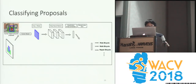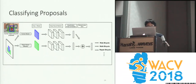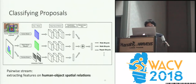Once we have a proposal, we use a multi-stream network to classify the interactions. This multi-stream network extracts features from multiple sources, including a human stream to extract features from the human bounding box, an object stream to extract features from the object bounding box, and also a pairwise stream extracting features on the spatial relation between the human and the object bounding box.